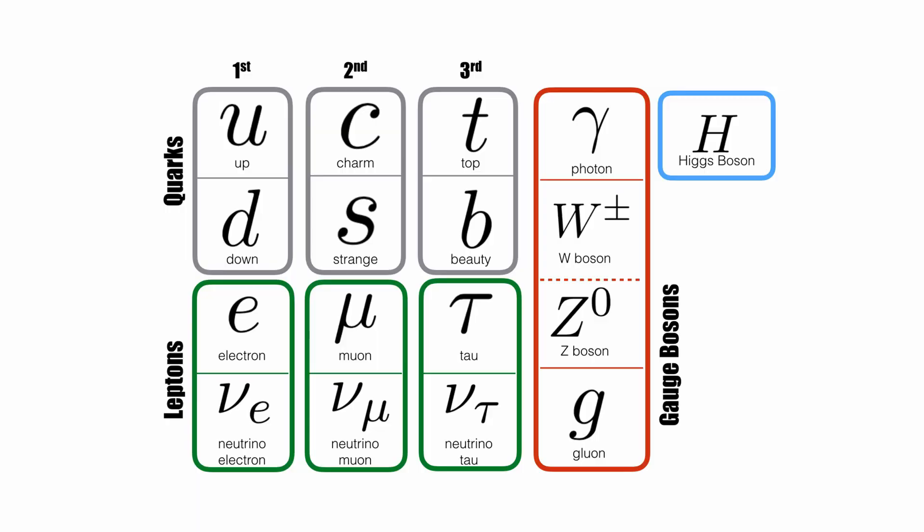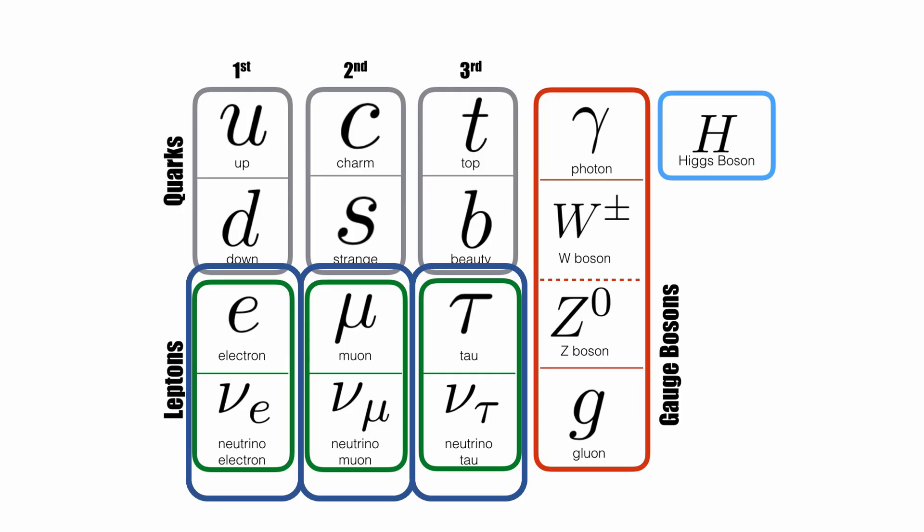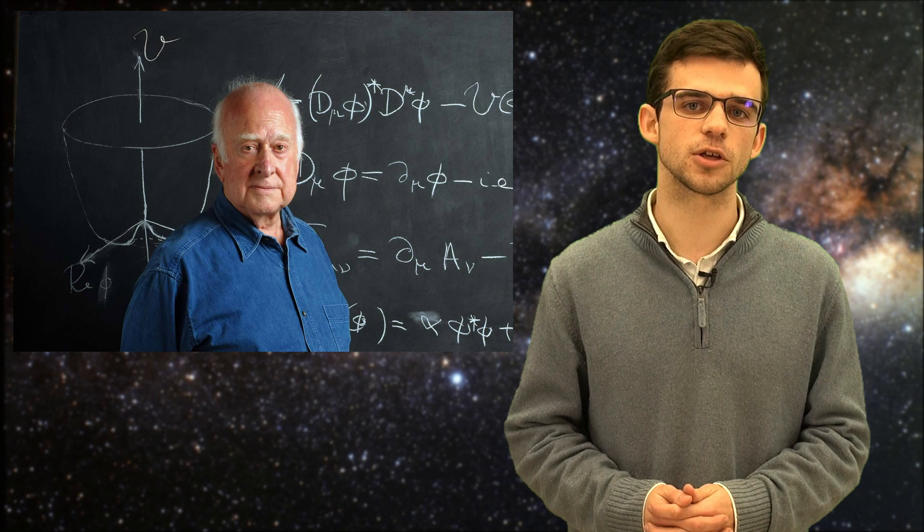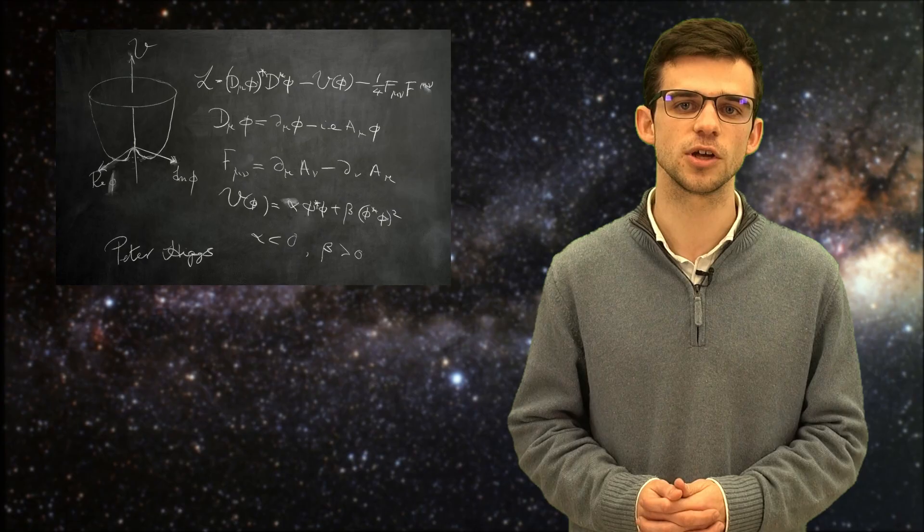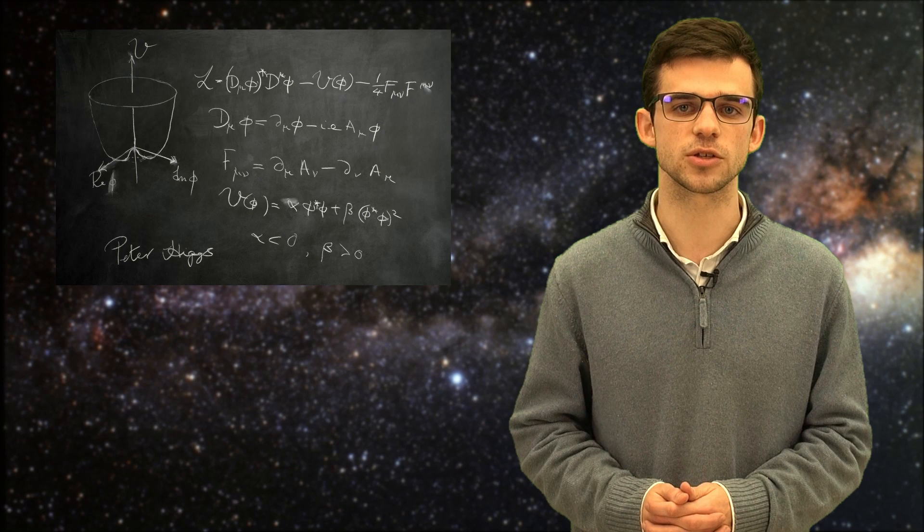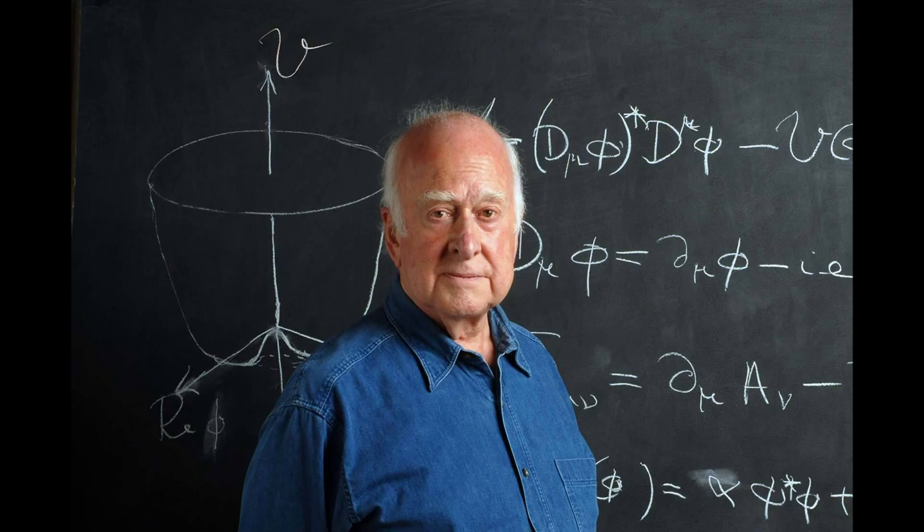The standard model contains the force carriers, a single Higgs boson and matter particles, which are organized into one of three families of leptons or into one of three families of quarks. The Higgs boson has a crucial role in the masses of the particles since it is through the Higgs vacuum expectation value, the value around which the Higgs oscillates, that all the fundamental particles gain their masses. This is the so-called Higgs mechanism.